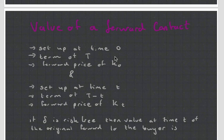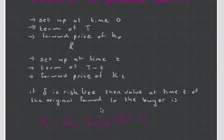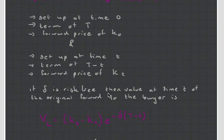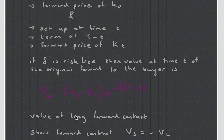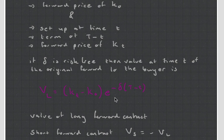So, value of a forward contract. So, we set up at time 0, a term of T, we've got the forward price of K0. And we set up at time t, this is little t, term of T minus little t, the forward price. So, like I say in our example, let's just make little t half the year. Now, if delta is the risk-free interest rate, then the value at time t of the original forward to the buyer is as follows. We subtract the two amounts, and we discount it by half a year. And that will be the value of the long forward contract.